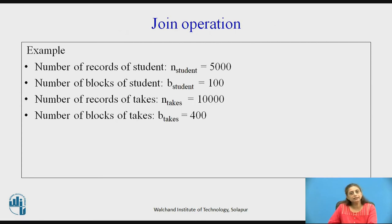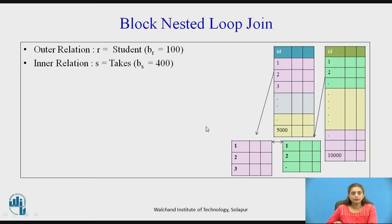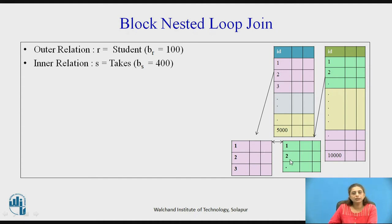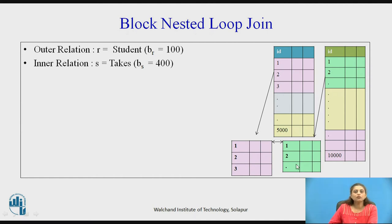Consider the same example as for nested loop join: the student relation has 5000 tuples and 100 blocks, and the tex relation has 10000 tuples and 400 blocks. The outer relation is student and the inner relation is tex. The first block of relation R and the first block of relation S are brought in. Each tuple from the first block of R is compared with all tuples in the first block of S, then with the second, third, and so on. Once all comparisons for block 1 of R against all blocks of S are done, the next block of R is brought to main memory.